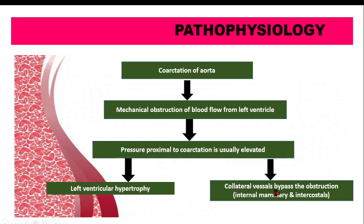The body also forms collateral blood vessels to bypass the obstruction. These collateral vessels — internal mammary and intercostal arteries — form new pathways from before the obstruction to beyond it, allowing some blood flow to bypass the coarctation.